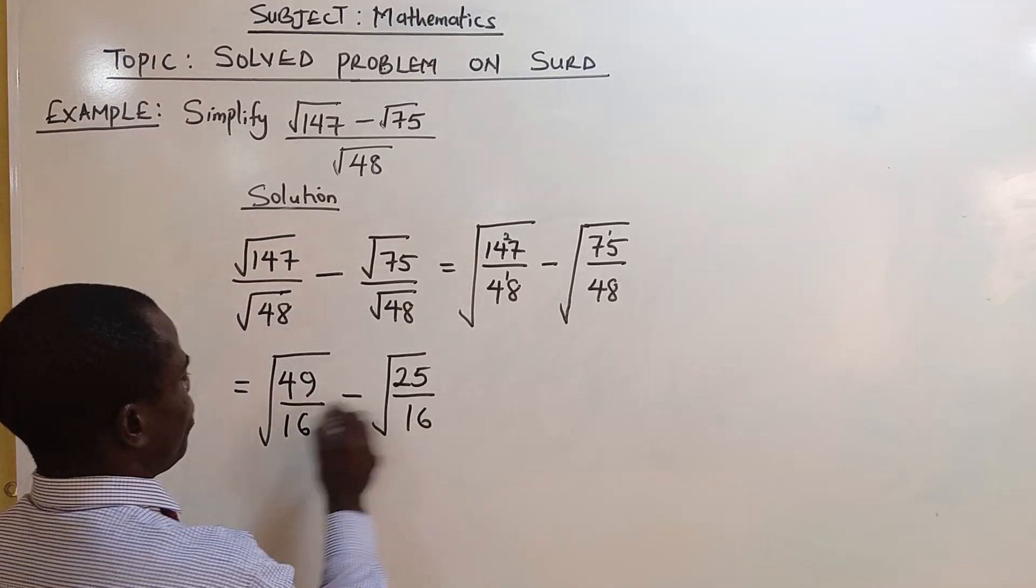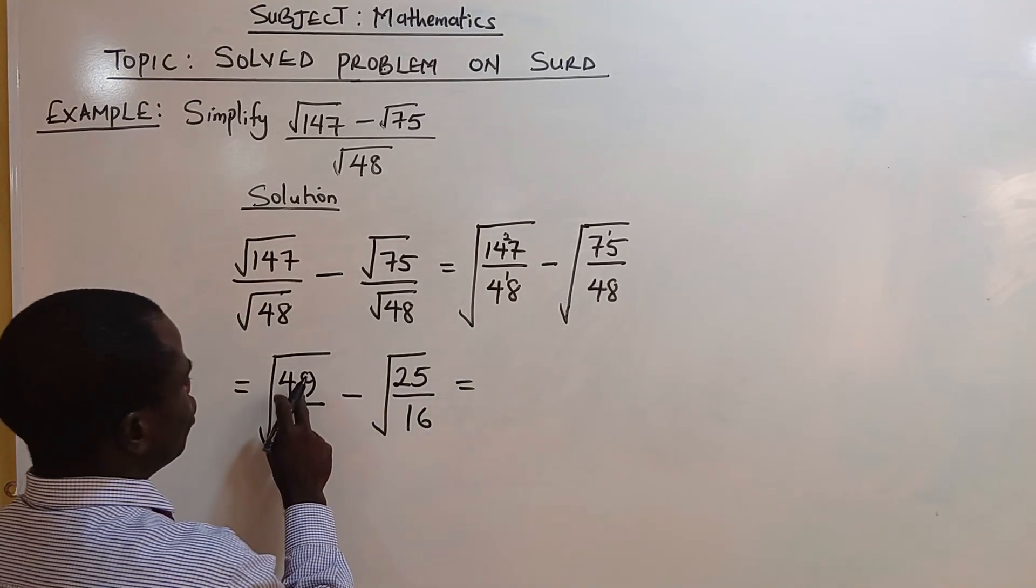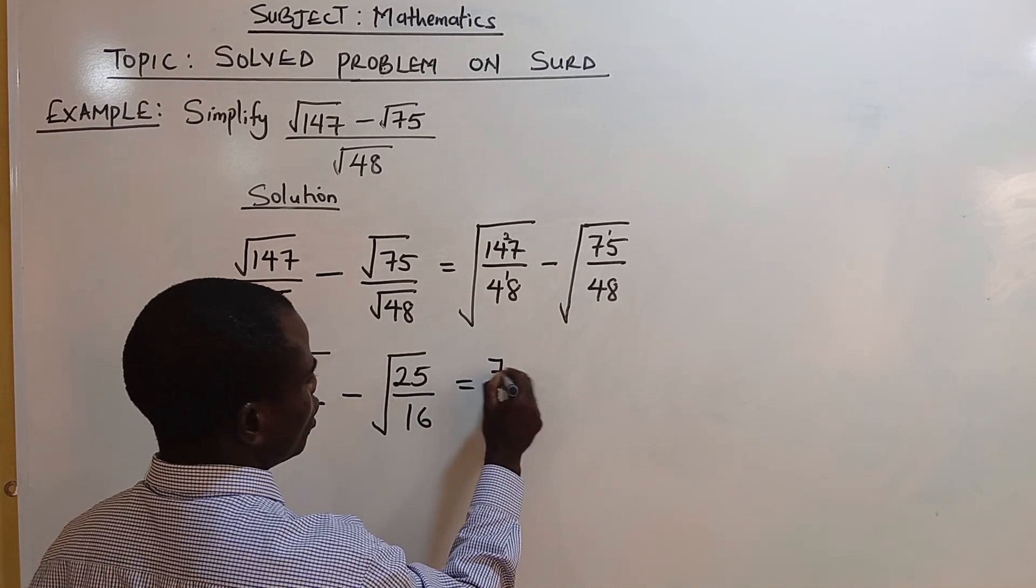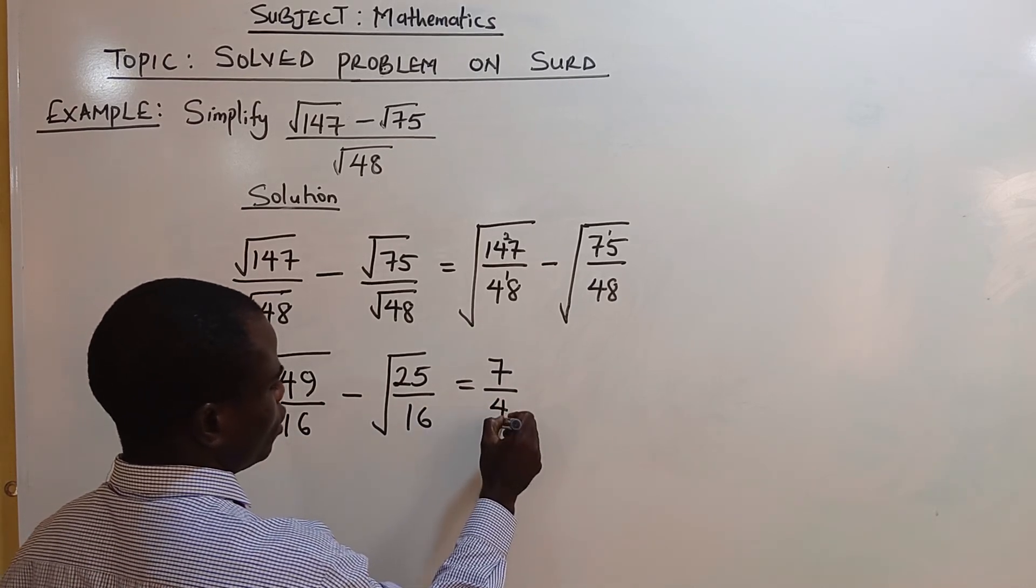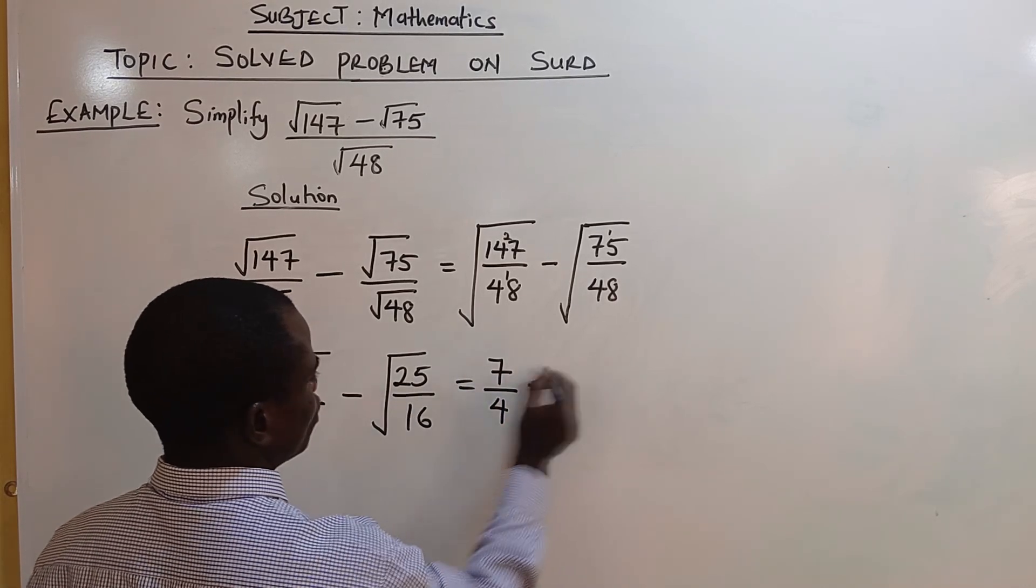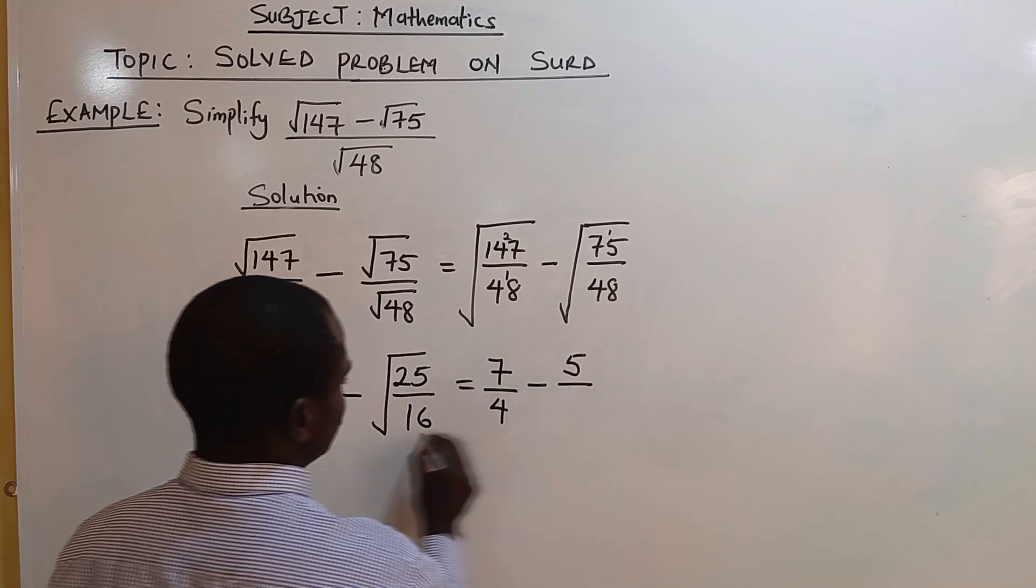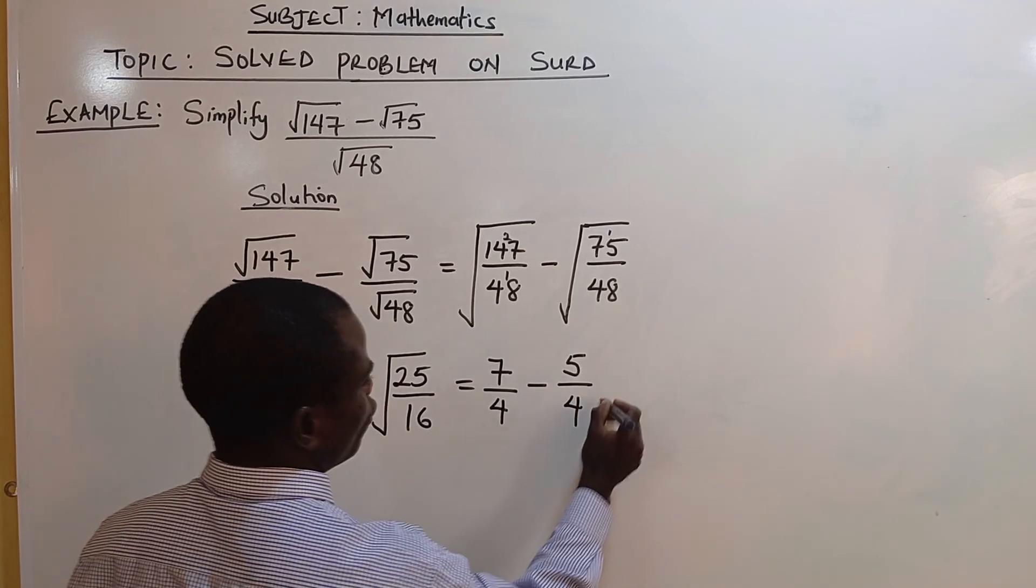Square root of 49: 7 times 7 is 49, and 4 times 4 is 16. Minus square root of 25 is 5, square root of 16 is 4.